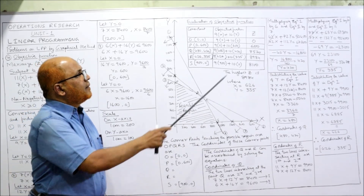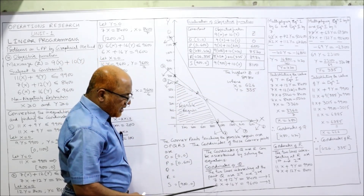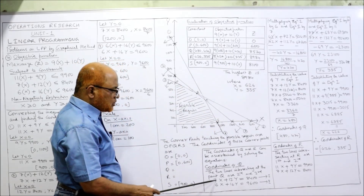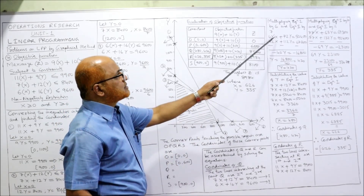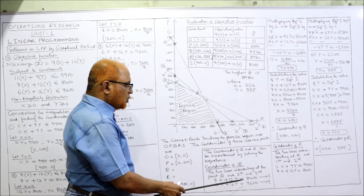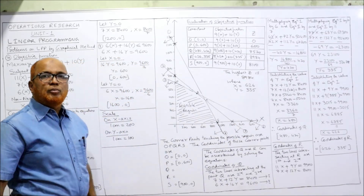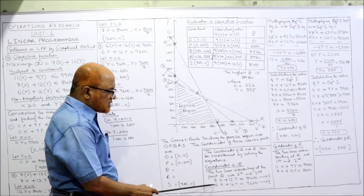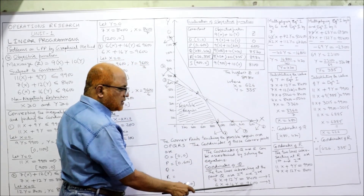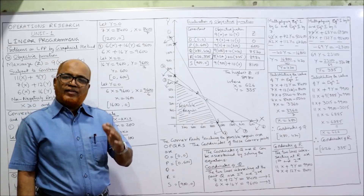Multiplying equation 1 (second inequality) by 6: 42x + 72y = 50400. Multiplying equation 2 (third inequality) by 7: 42x + 112y = 67200. Changing the sign of the second and subtracting: 42x cancels. 72y minus 112y gives minus 40y. 50400 minus 67200 gives minus 16800. The negatives cancel, so 40y = 16800, giving y = 420.